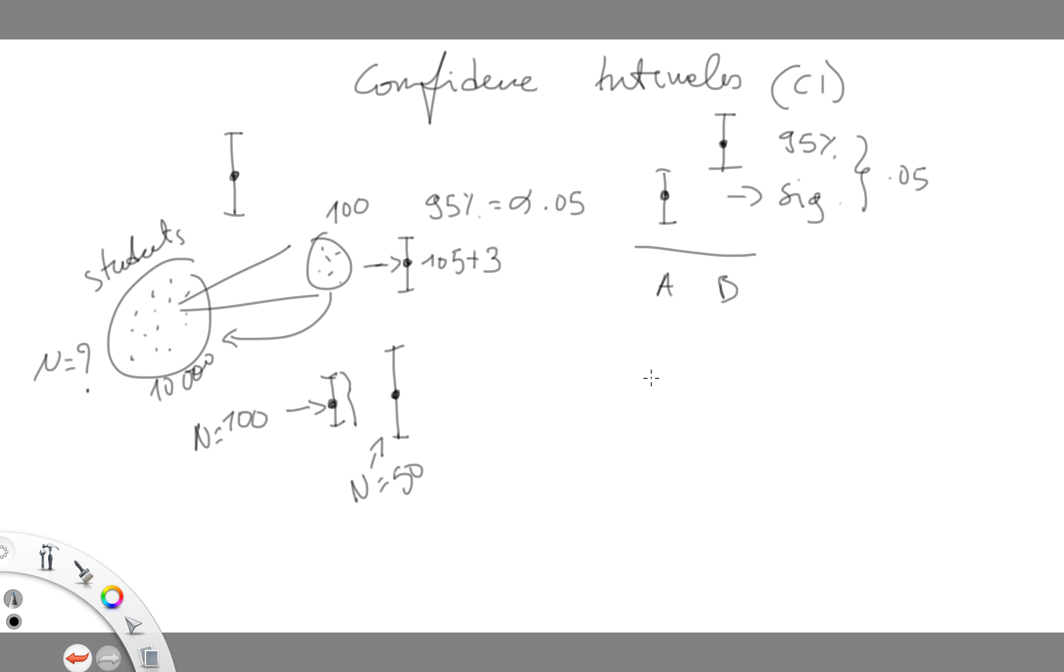If the confidence intervals overlap substantially between two groups - as you can see, the confidence intervals overlap quite a bit here, they didn't overlap at all previously - it means that the test is not significant with 95% confidence intervals. So in this case the test is not significant.